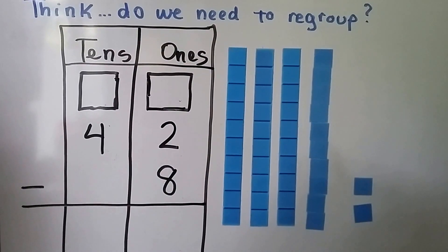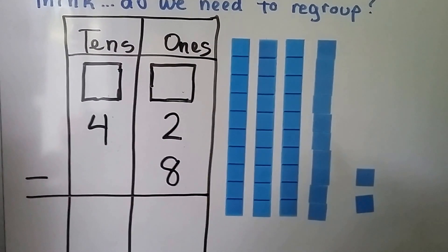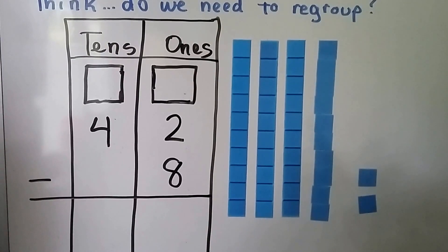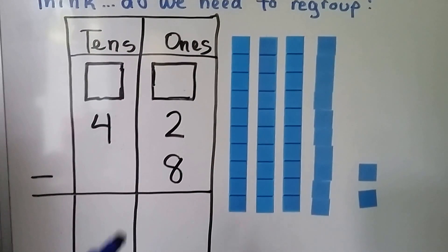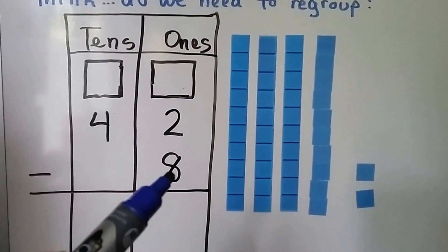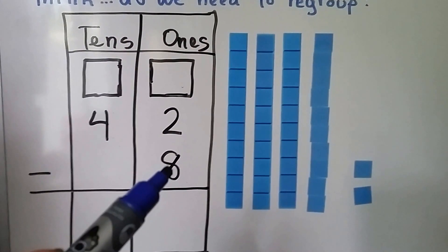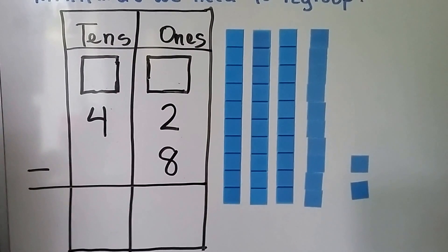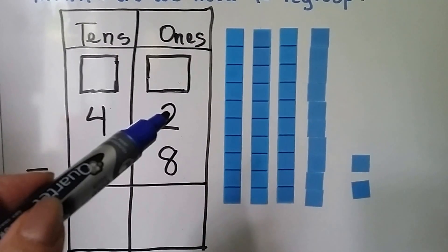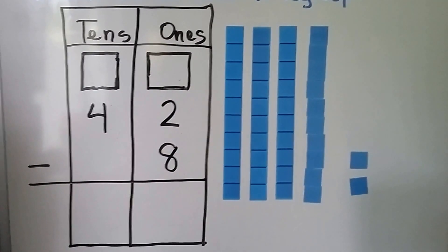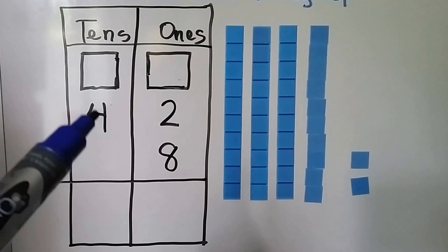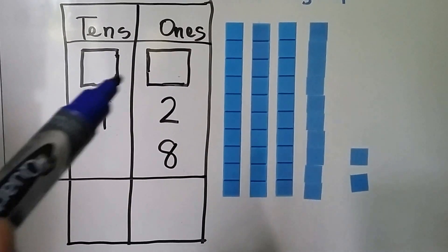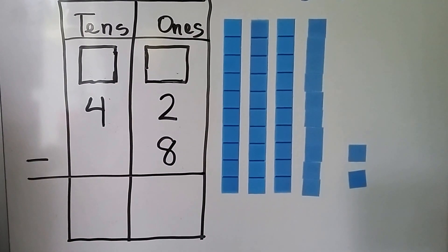In this problem, we have 42 minus 8. We need to think: do we need to regroup? We look at the number 8 here, and if it's greater than the number above it, then we're going to have to regroup. We can't have 2 and take 8 away. We need to regroup from the 10's place and give some to the 1's place.